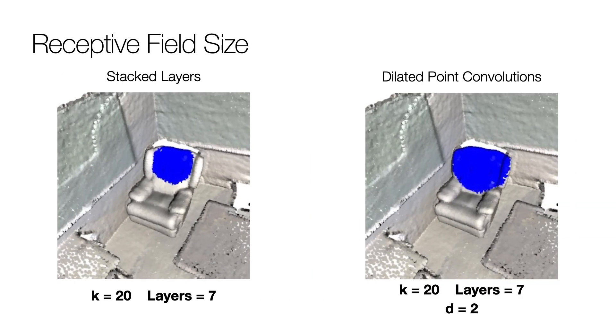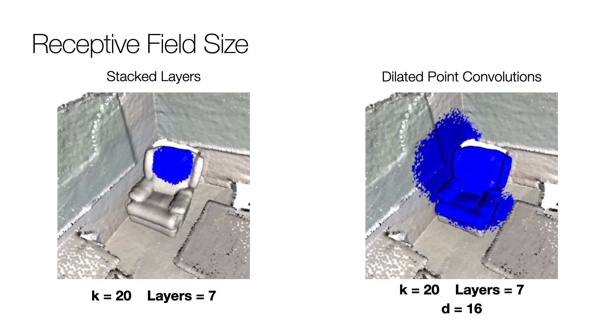Using dilated point convolutions, the receptive field size is significantly increased while using the same kernel size and number of layers.